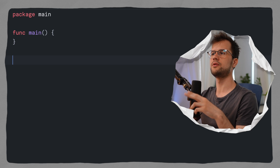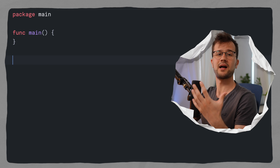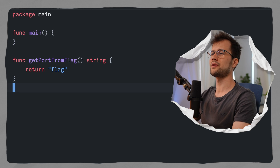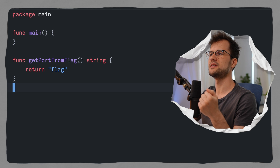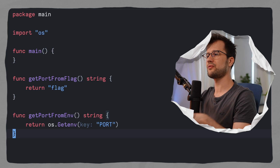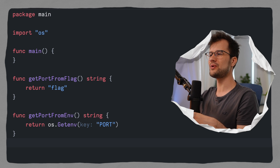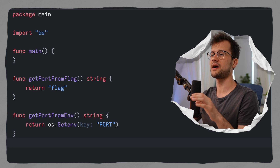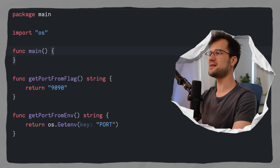I will create two utility functions to mock the values for our CLI and environment value. The first function basically only returns a string, and the value here is for now just the flag value. Then we also have a getPortFromEnv function which also returns a string, and it gets the environment variable port if it is defined — if it's not defined, it just returns an empty string. Let's change the port for our flag to 1990, and then in our main function we will make use of the cmp.or function.